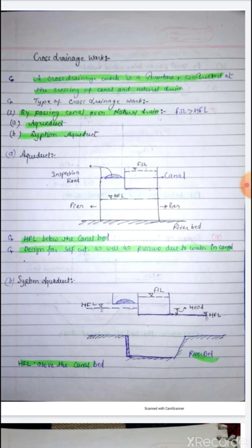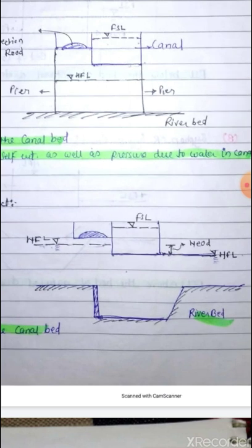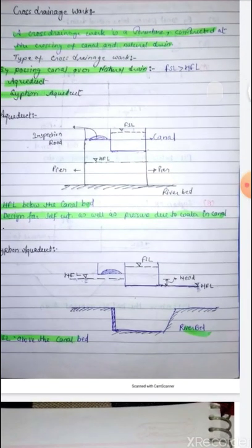The second type is siphon aqueduct. In siphon aqueduct, the HFL — that is, the high flood level of the drain — is much higher above the canal bed, as you can see in the figure. In this case, water of the natural drain runs under siphonic action through the aqueduct.